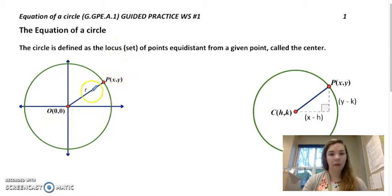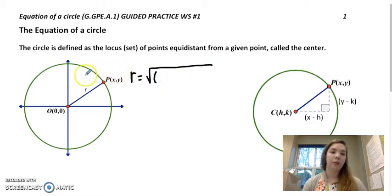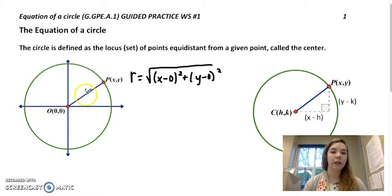What we have here, if I want to figure out what this radius is, I can use the distance formula. So the radius is equal to the square root, and then you subtract your x's, you have x minus 0 squared plus y minus 0 squared. That's what the radius is equal to. If I want to get rid of this square root, then I have to square both sides. So then you have r squared equals x squared plus y squared.